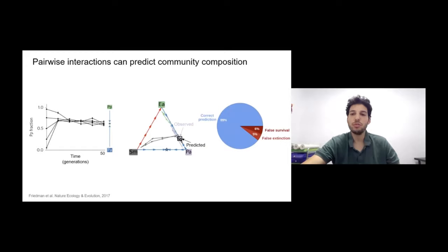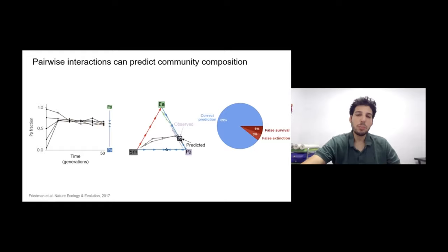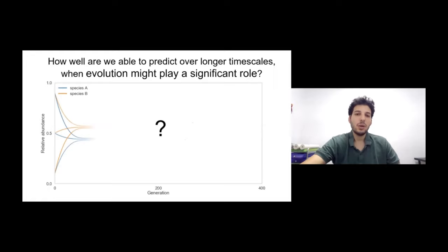Two important additional things to note: first, how repeatable the dynamics are — different initial conditions or replicates all converge to the same fraction, and the same is true in the trios. Second, the timescale: this experiment lasted about 50 generations. What we wanted to know next — the subject of this talk — is what happens over longer timescales when evolution might play a significant role.